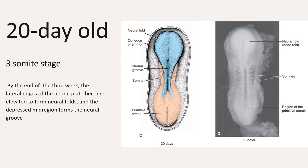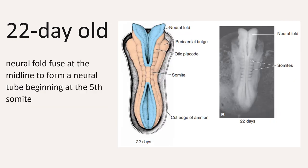This 20-day-old embryo already has three pairs of somites. By the end of the third week, the lateral edges of the neural plate become elevated, forming what you call the neural fold, and the depressed mid-region forms what you call the neural groove. In this 22-day-old embryo, notice that gradually the neural folds approach each other in the midline, where they fuse. Fusion begins in the cervical region, somewhere around the fifth somite, and it will proceed cranially and also caudally.